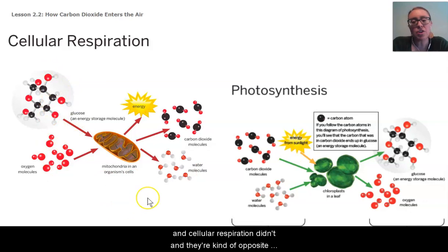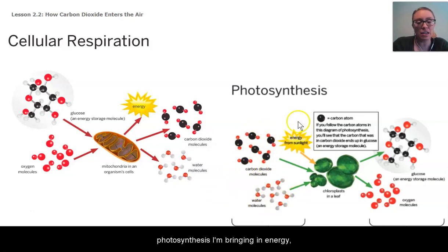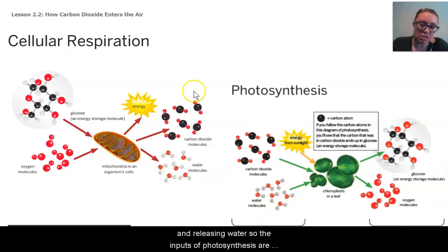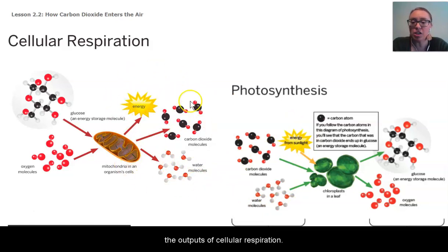And they're kind of opposite processes because if I look at what the inputs are in photosynthesis, I'm bringing in energy, carbon dioxide, and water. Those are sort of the things that I'm getting out of cellular respiration. So respiration, I'm releasing energy, releasing carbon dioxide, and releasing water. So the inputs of photosynthesis are the outputs of cellular respiration.